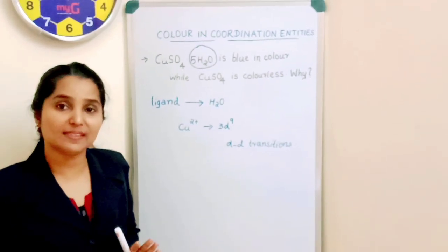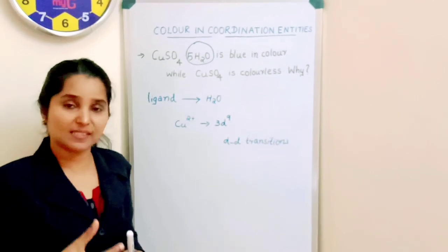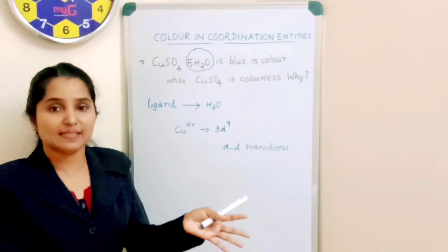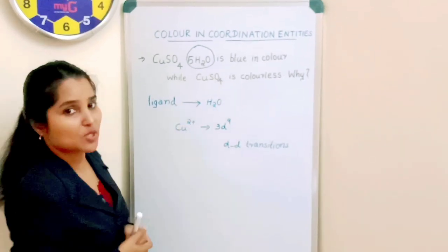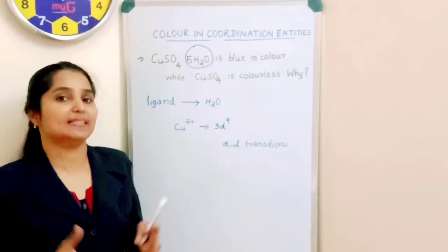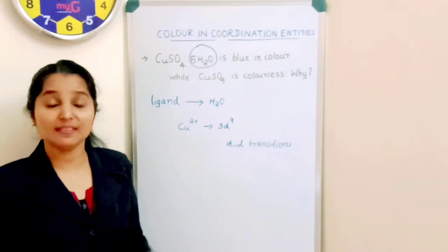But if there is no crystal field splitting, no DD transition. Why is there no crystal field splitting? Because ligands are not present. Presence of ligand is the cause of crystal field splitting. Since ligands are not present in CoSO4, no crystal field splitting takes place, and so there is no DD transition, and so it appears colorless.